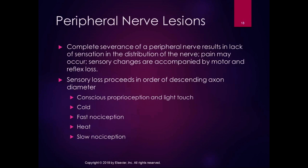Complete severance of a peripheral nerve can result in lack of sensation in that peripheral nerve distribution, and pain can be associated with it. Sensory changes are often accompanied by motor and reflex loss. Sensory loss proceeds in the order of descending axon diameter: first you lose conscious proprioception and light touch — the larger diameter axons — then cold, then fast nociception, then heat.